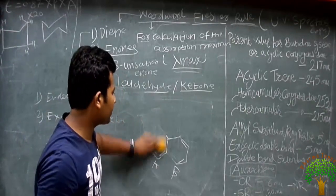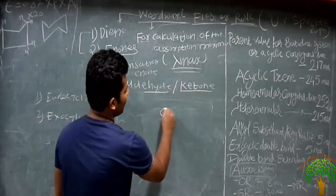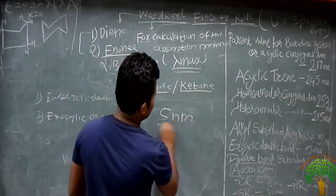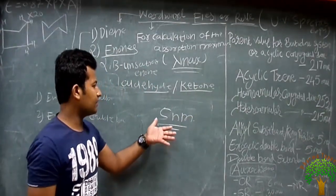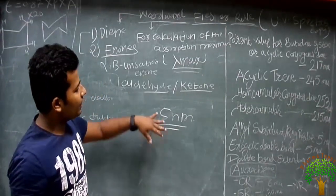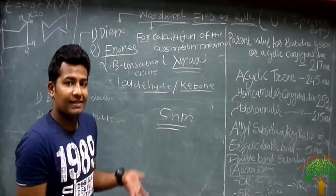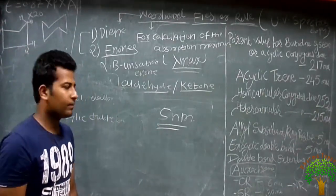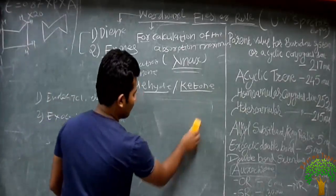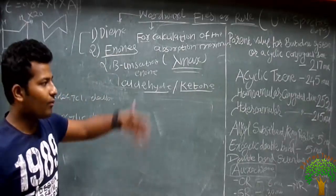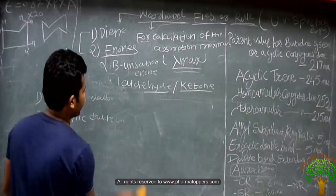During calculation of the Woodward-Fisher rule, we have to add 5 nanometers for each exocyclic double bond. We only add the exocyclic double bond increment in the structure calculation — we do not add a value for endocyclic double bonds. We will discuss the reason behind this later; first we discuss how to calculate, then the reason behind each increment.